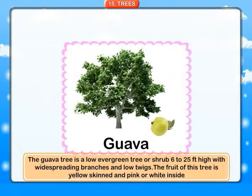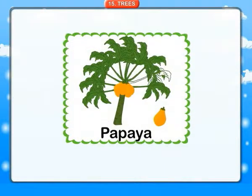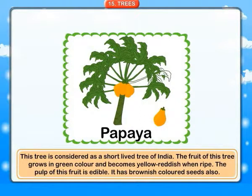The fruit of the guava tree is yellow-tinted and pink or white inside. Papaya: this tree is considered a short-lived tree of India. The fruit grows in green color and becomes yellow-reddish when ripe. The pulp of this fruit is edible. It has brownish color seeds also.